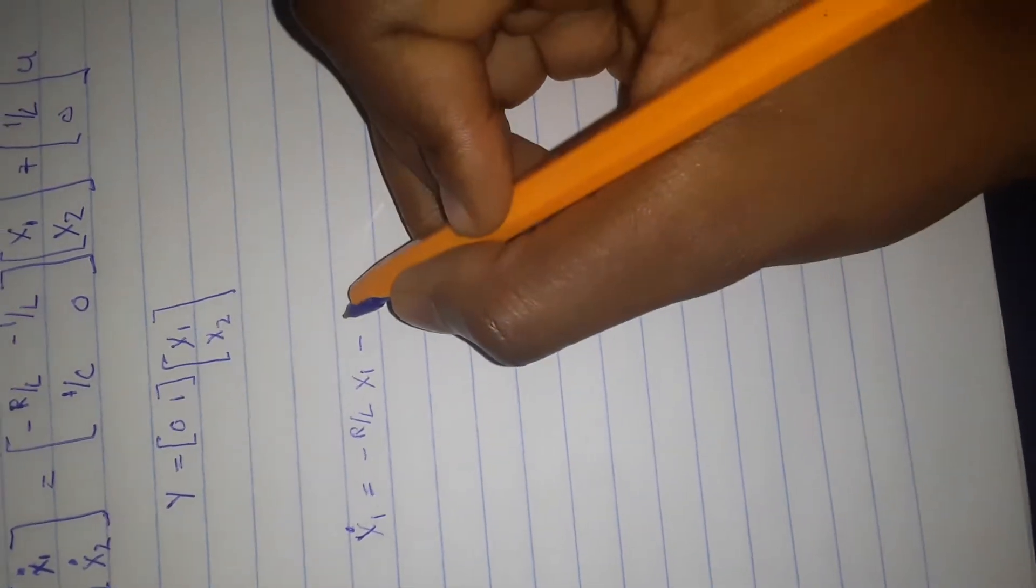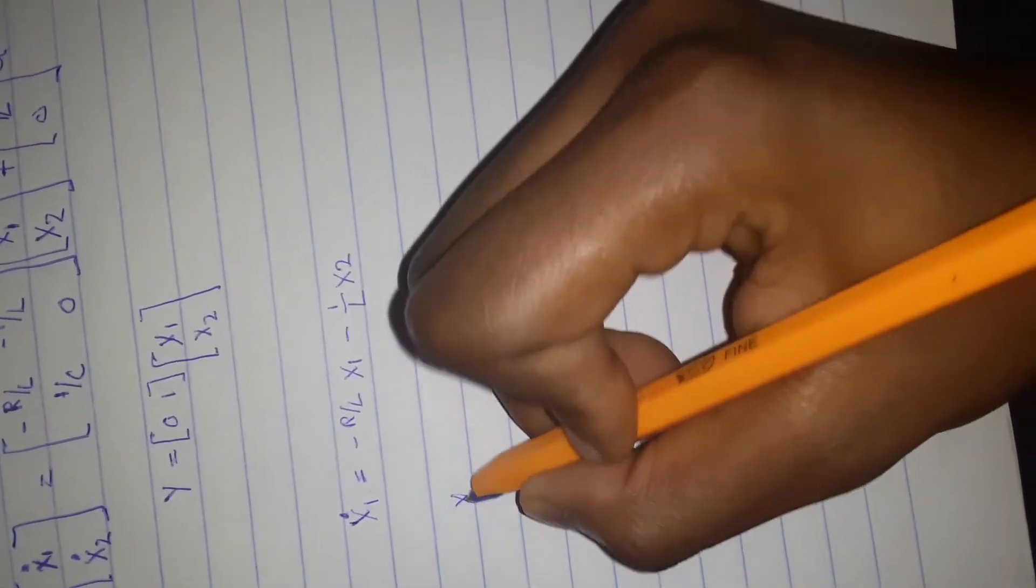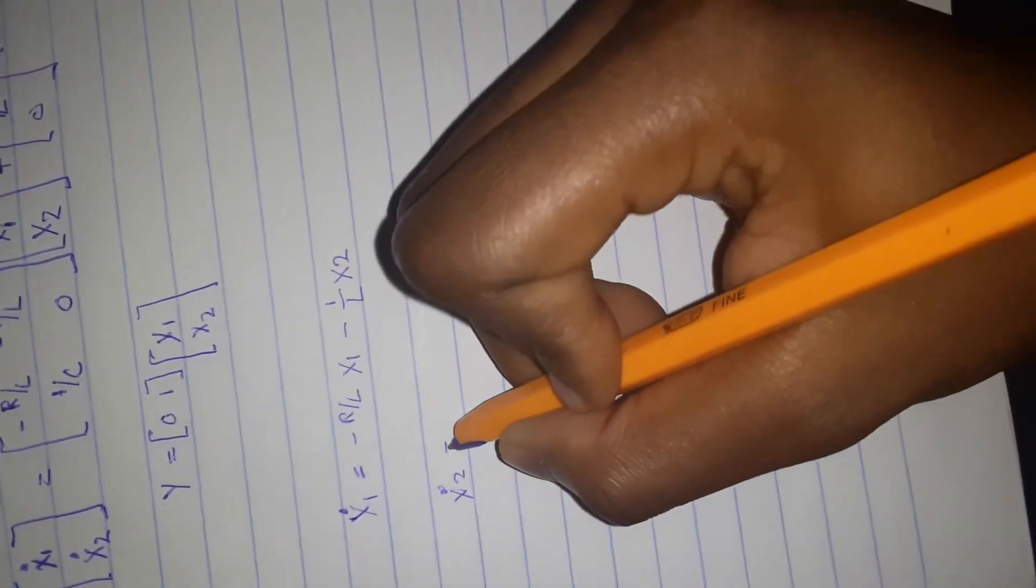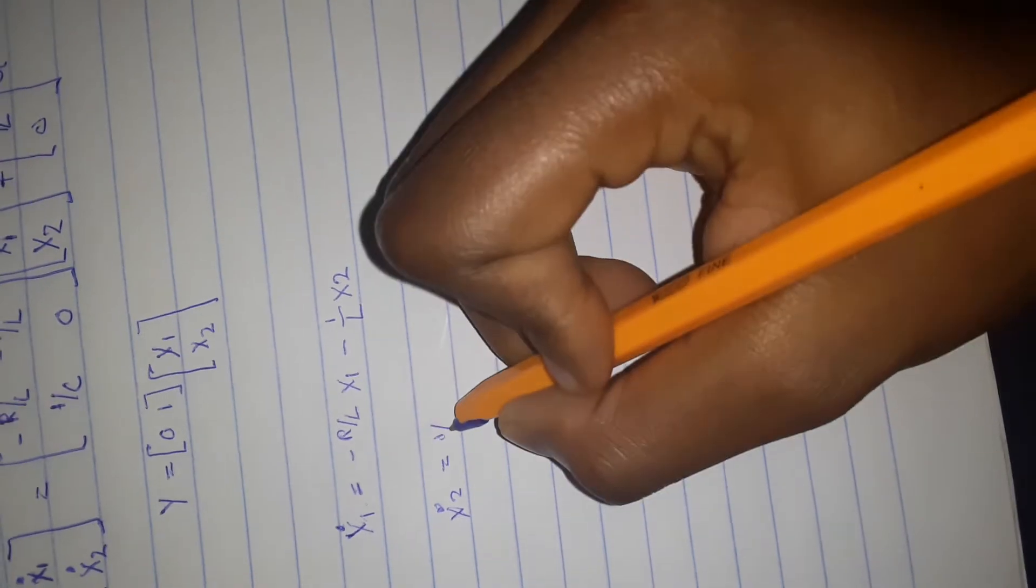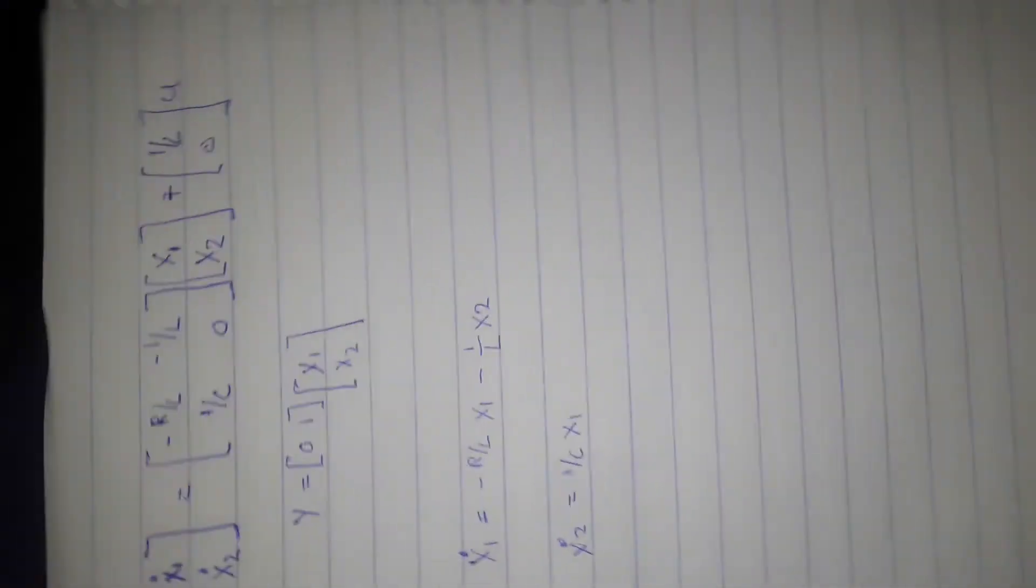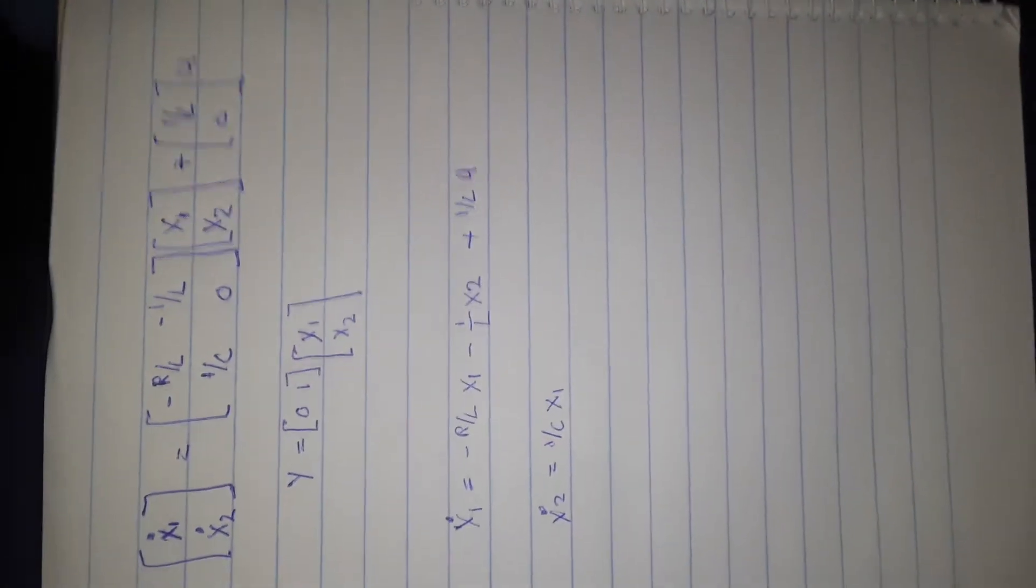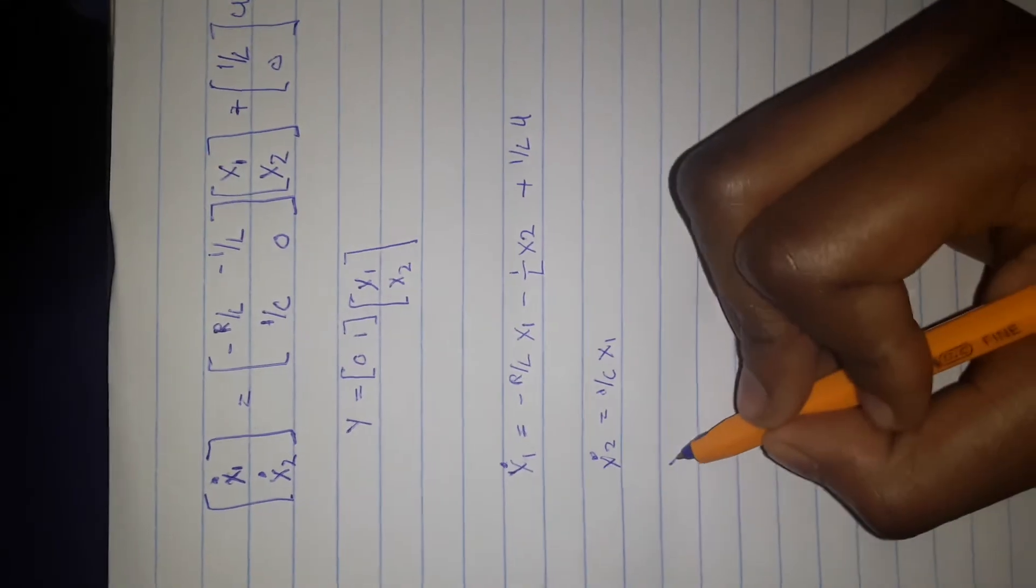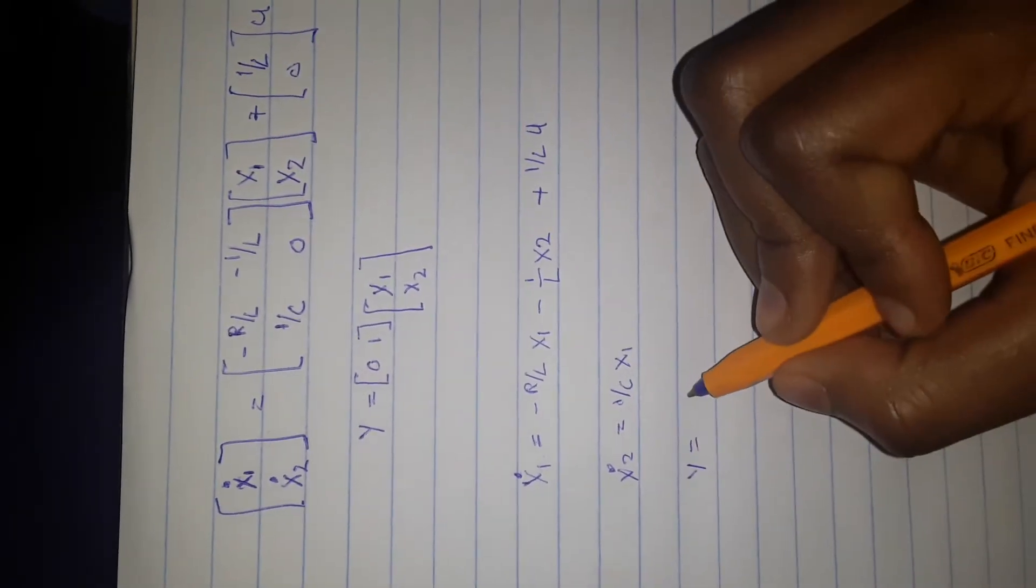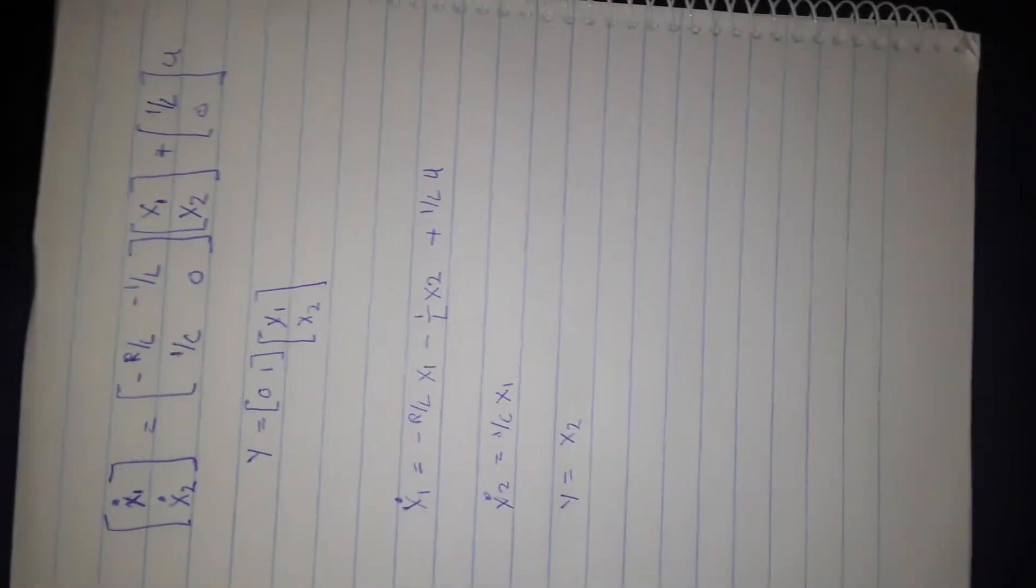minus 1 over L x2. And then x2 derivative equals 1 over C x1 plus 1 over L u. And then our output y equals x2.